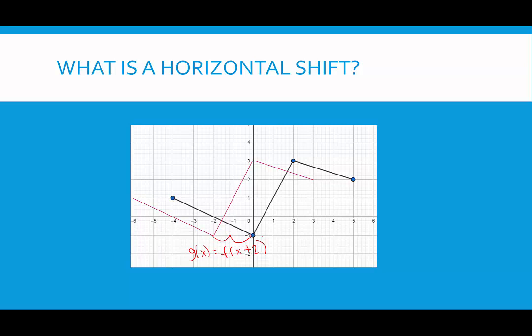Unlike vertical shifts, with vertical shifts, if it said plus 2, that meant move everything up 2. If it said minus 4, that meant move everything down 4 units. But with horizontal shifts, when it's inside the function, it is moving in the opposite direction of what we think.